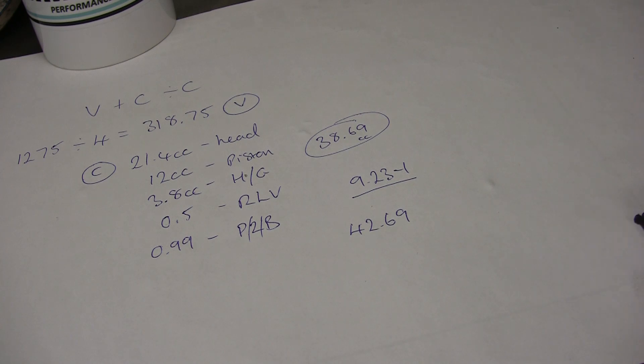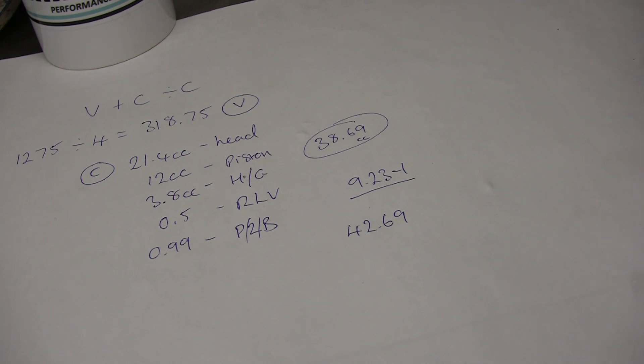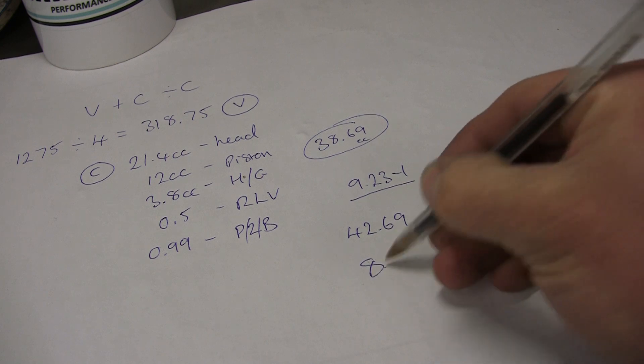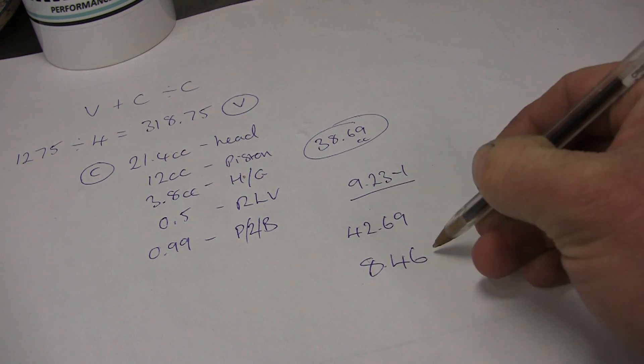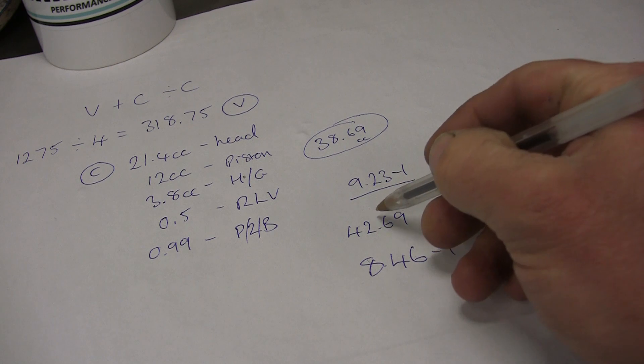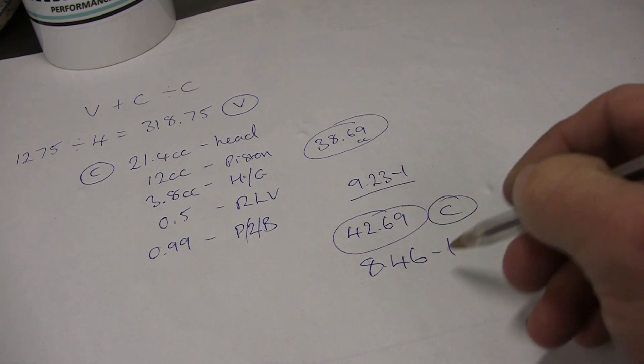We've added 4 cc into the mix, so V is 318.75 plus C, which is now 42.69, then divide by 42.69. We've now chucked another 4 cc in there, and the compression ratio is now 8.46 to 1. That's our new C and our new compression ratio.